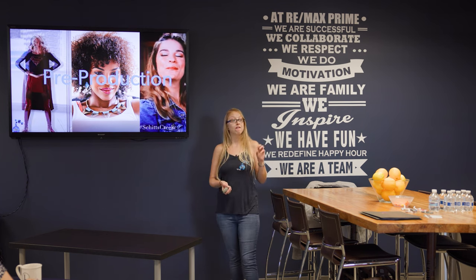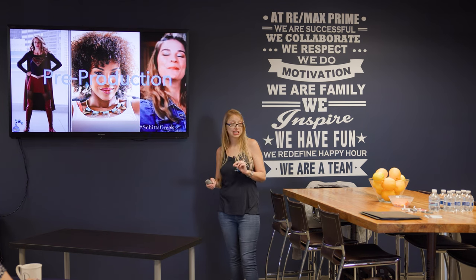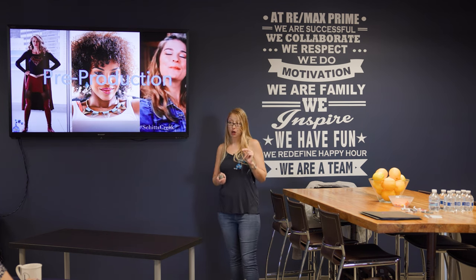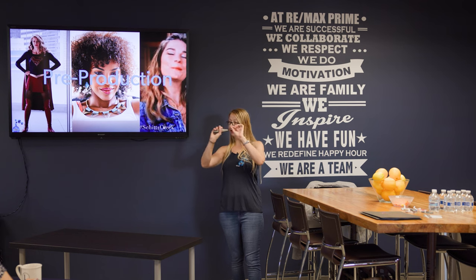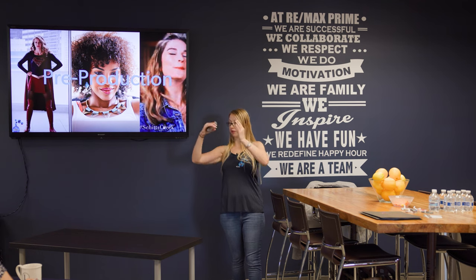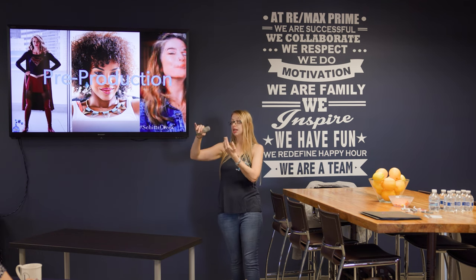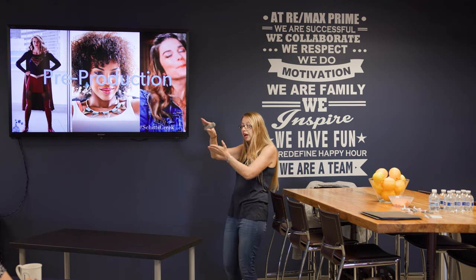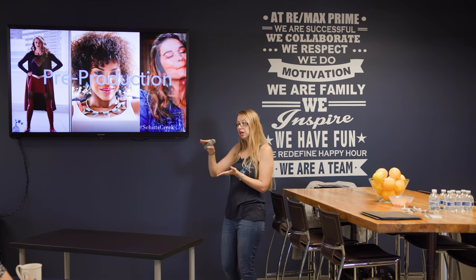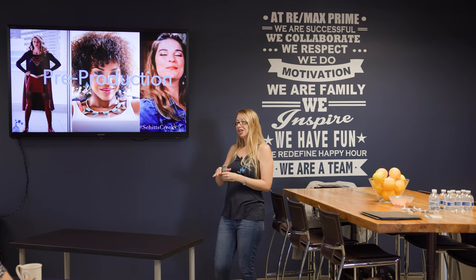What you want to do is find your perfect speed where you're constantly reading in the middle of the frame. When you look at that box and the frame, you want to make sure you create a speed on the teleprompter app where you're always in the middle.